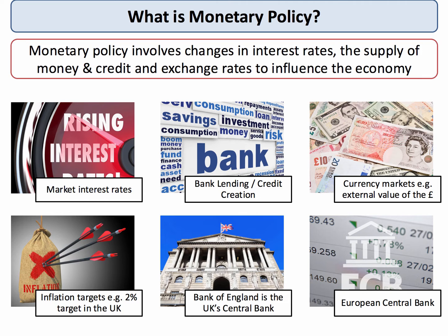In future topic videos we'll focus on bank lending and credit creation, important aspects of monetary policy. We'll also look at the economics of exchange rates and inflation targets. In the UK, the Bank of England has been set a CPI inflation target of two percent — in other words, the annual change in consumer prices is hopefully kept to a two percent limit. Crucial to monetary policy is the role of the Bank of England, the UK's central bank. Keep in mind also that the UK is still part of the European Union, and 19 of the 28 member nations of the EU are under the auspices of the European Central Bank.